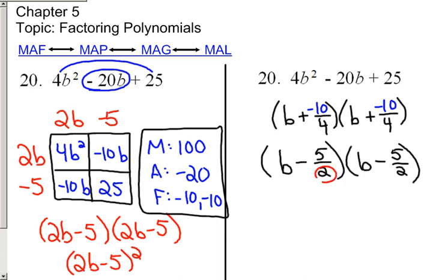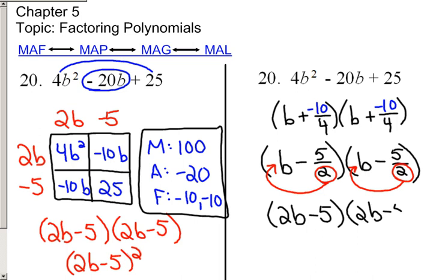Last step, if there is still a denominator that is other than 1, it should be moved in front of the variable. So I end up with 2B minus 5 times 2B minus 5, which since this is the same polynomial, I knew I would get that answer.